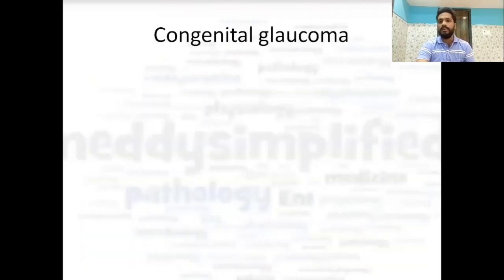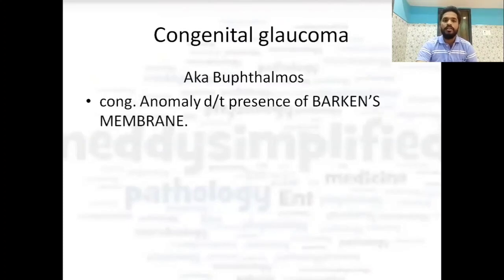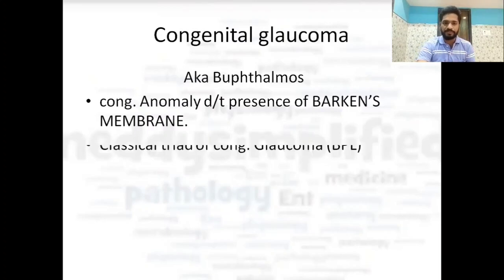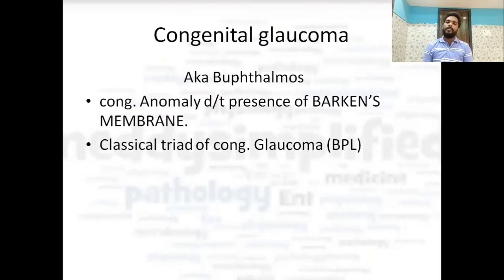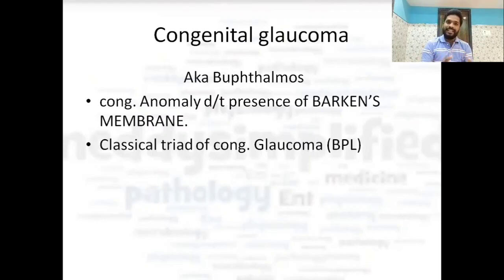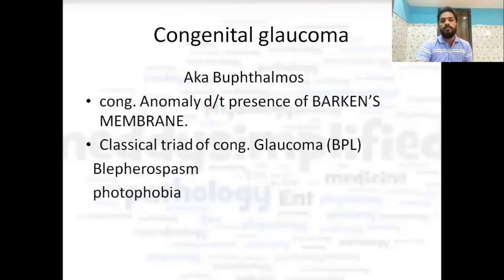Congenital glaucoma is also known as buphthalmos. It is caused by a congenital anomaly due to the presence of Barkan's membrane. There is a classical triad of congenital glaucoma — a mnemonic: BPL — Blepharospasm, Photophobia, and Lacrimation.